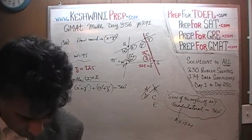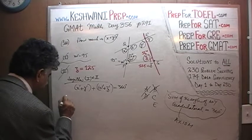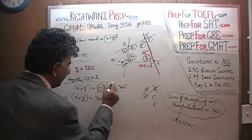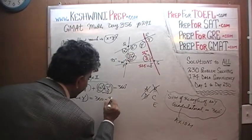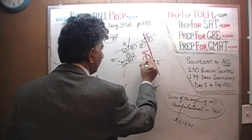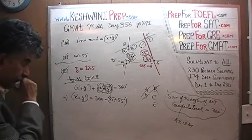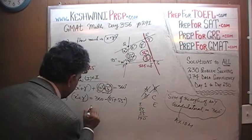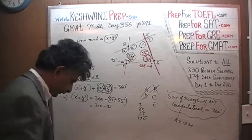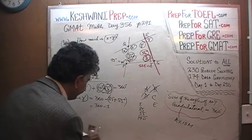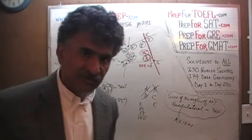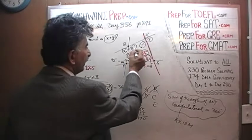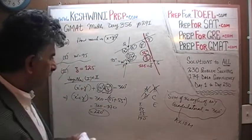So this implies that x prime plus y prime must equal 360 minus the quantity w prime plus z prime. We know w prime is 85 and z prime is 55. So 85 plus 55 is 140, and therefore x prime plus y prime equals 360 minus 140, which is 220.